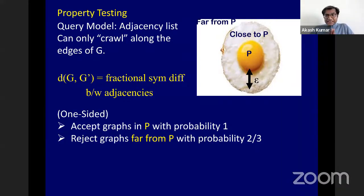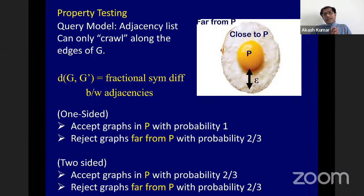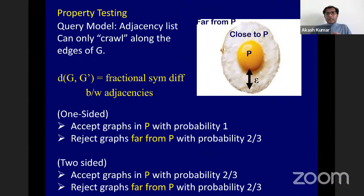Since I insist you always accept a planar graph, whenever you reject a graph you better have a certificate of rejection — some reason why this graph cannot conceivably be planar. The two-sided variant relaxes the problem: you're allowed to accept planar graphs with probability at least two-thirds — you no longer need to always accept them. The rejection criterion remains the same: stuff outside the egg white must be rejected with probability at least two-thirds.